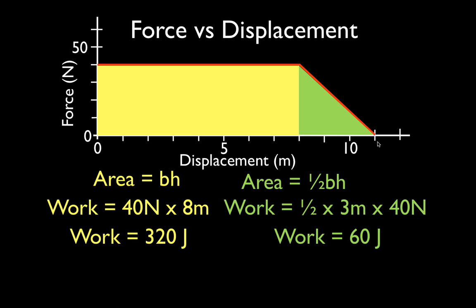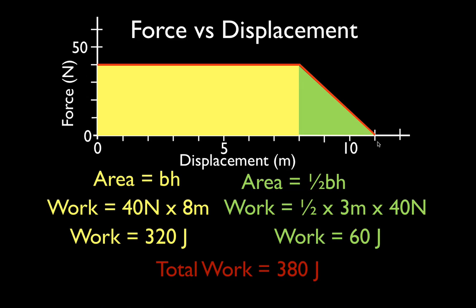What is the total work done? Simply add the two together: 320 plus 60 is 380 joules. That is the total amount of work done by that variable force. Simply calculate the area under each section of the curve — the area between the line and the x-axis — and you will have the total amount of work done. Thank you very much for watching; I hope you found that helpful. Please leave a positive comment and a thumbs up, and we'll see you in the next video.